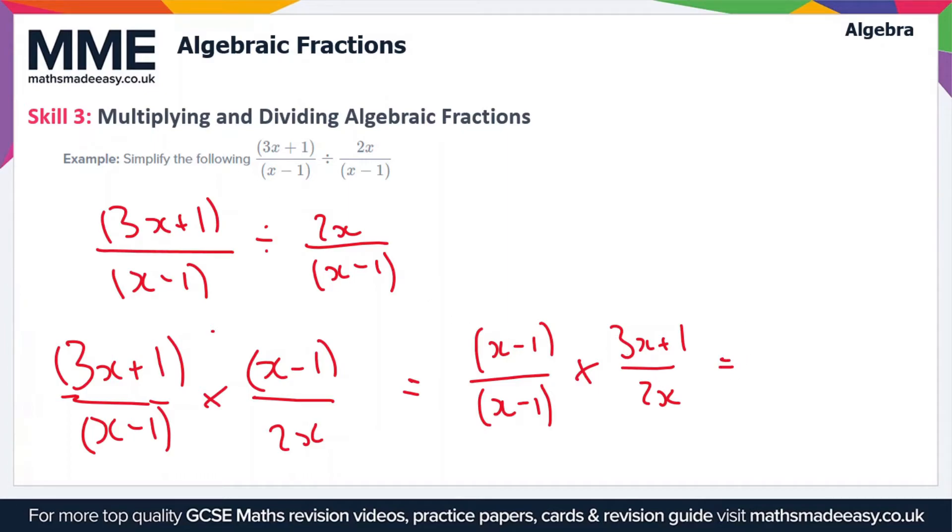And so it should become clear here that (x - 1) divided by (x - 1) is just equal to 1. So we've got 1 times (3x + 1) / 2x. So that's actually just the simplified form of the fraction.